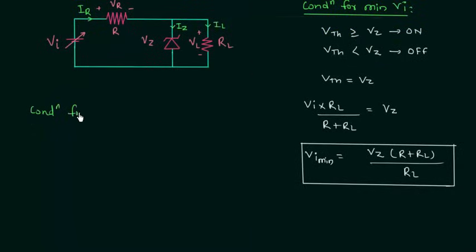The condition for maximum input voltage is limited by the value of maximum Zener current IZ max, and we cannot increase IZ beyond this value.